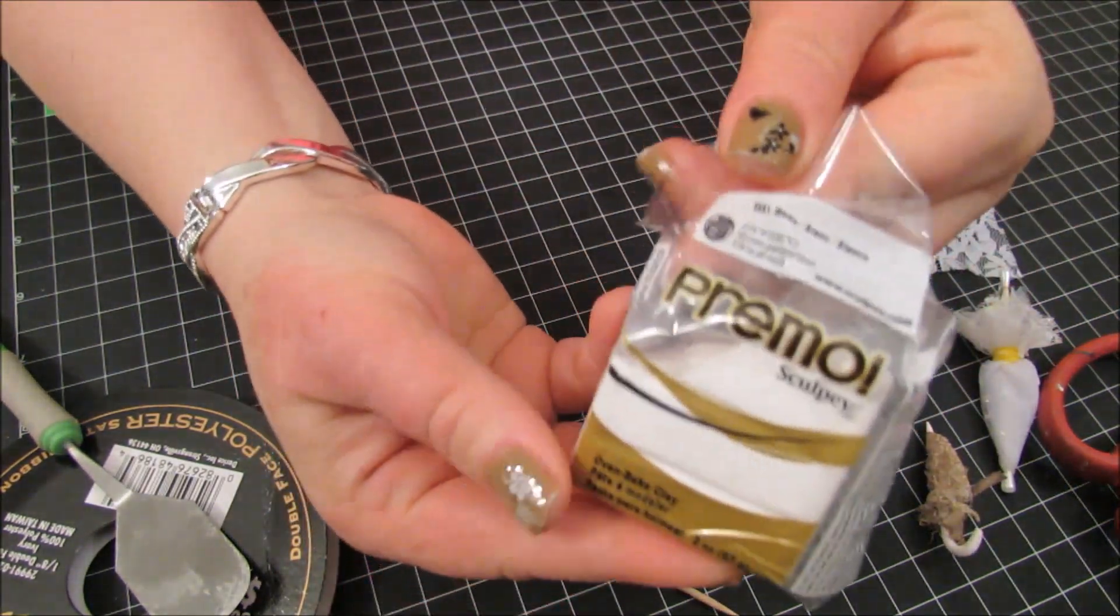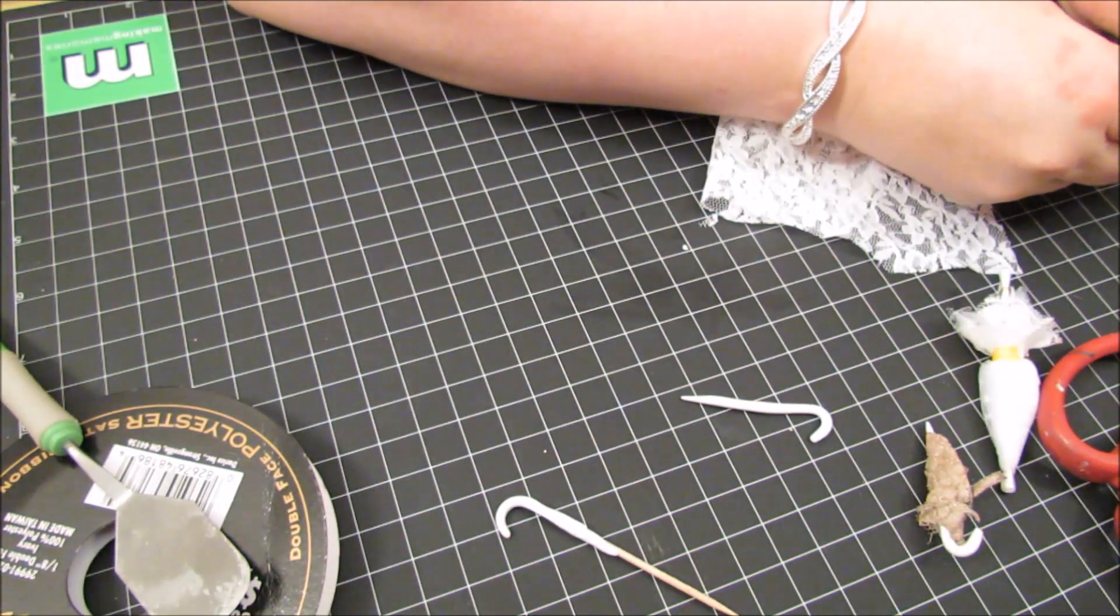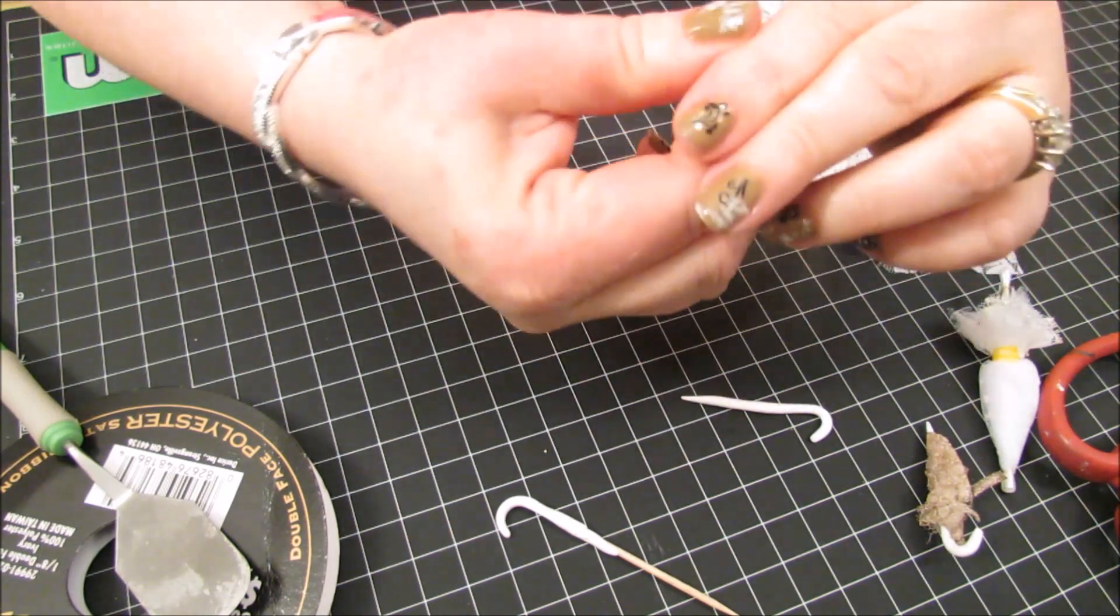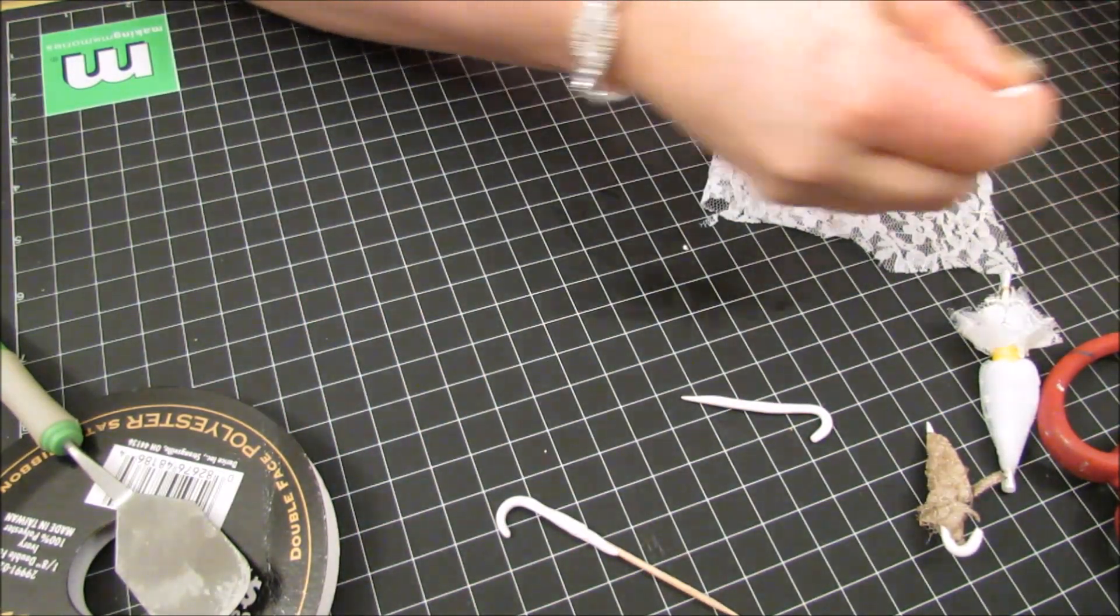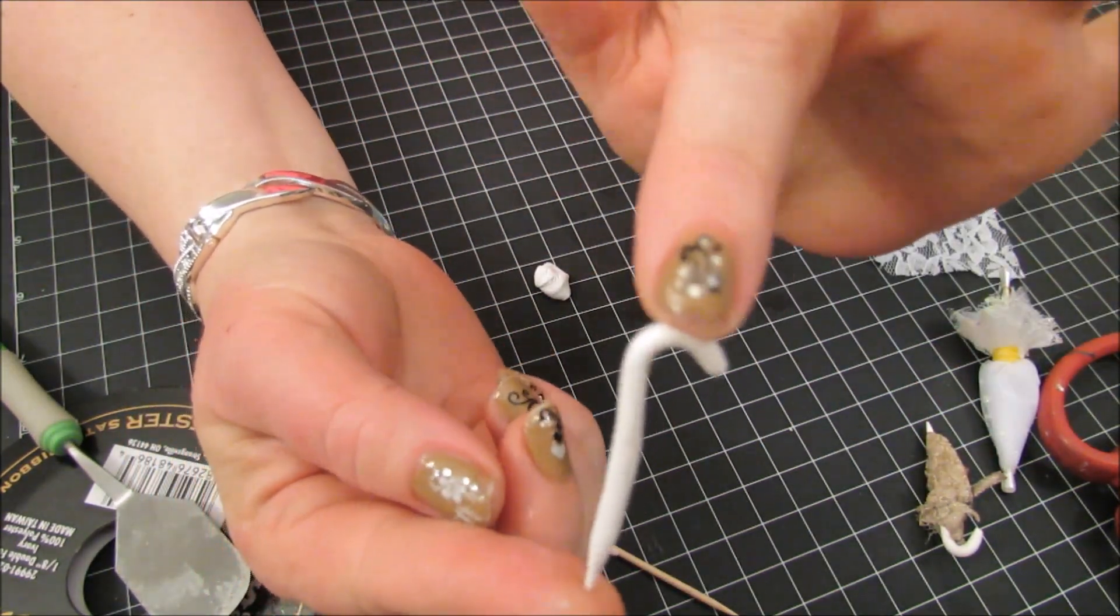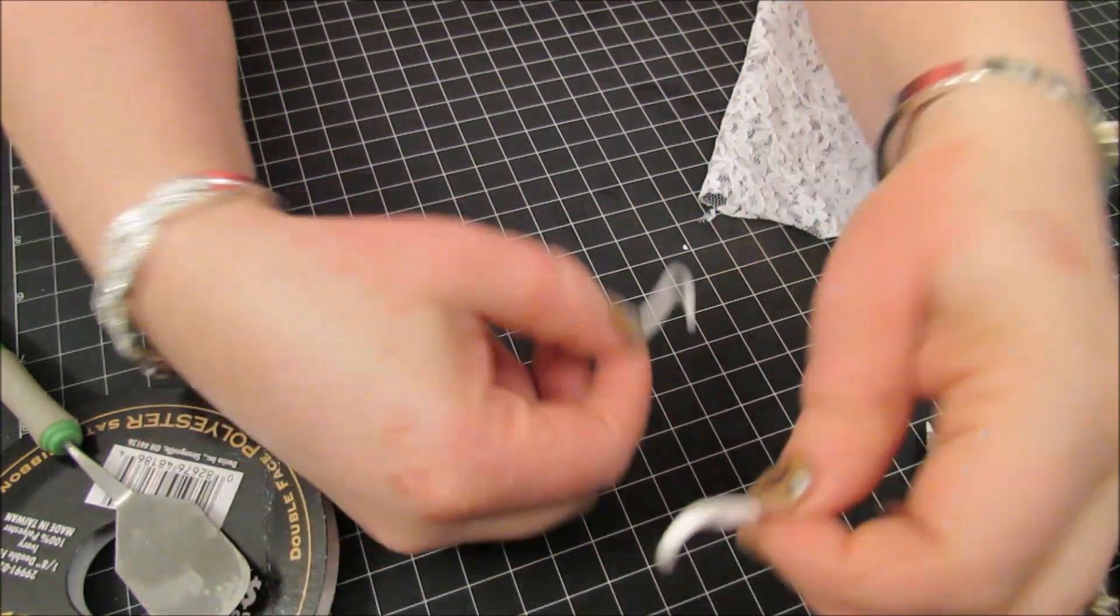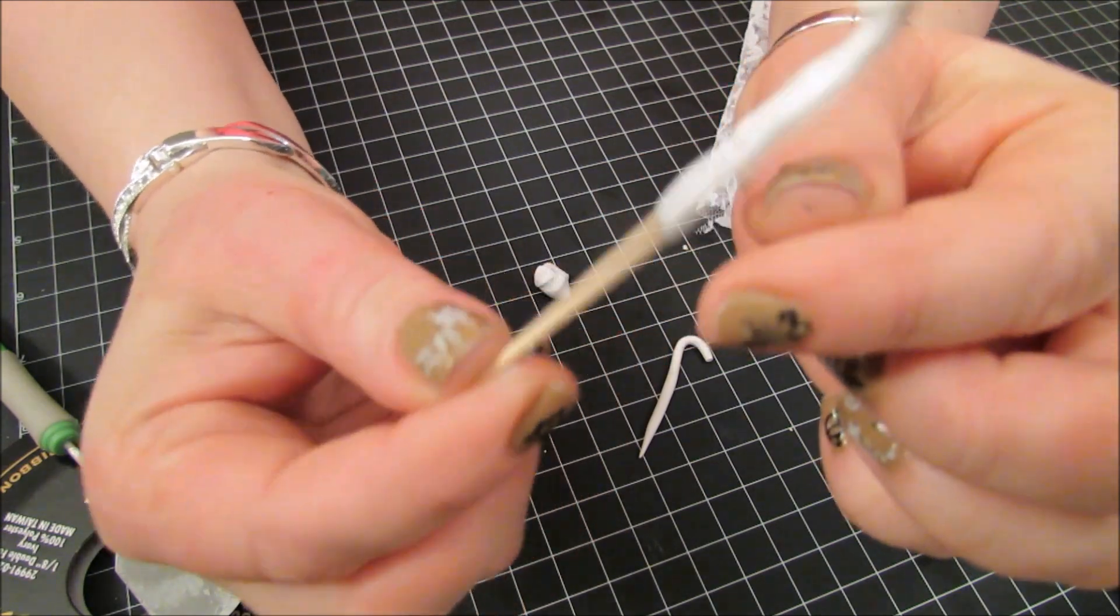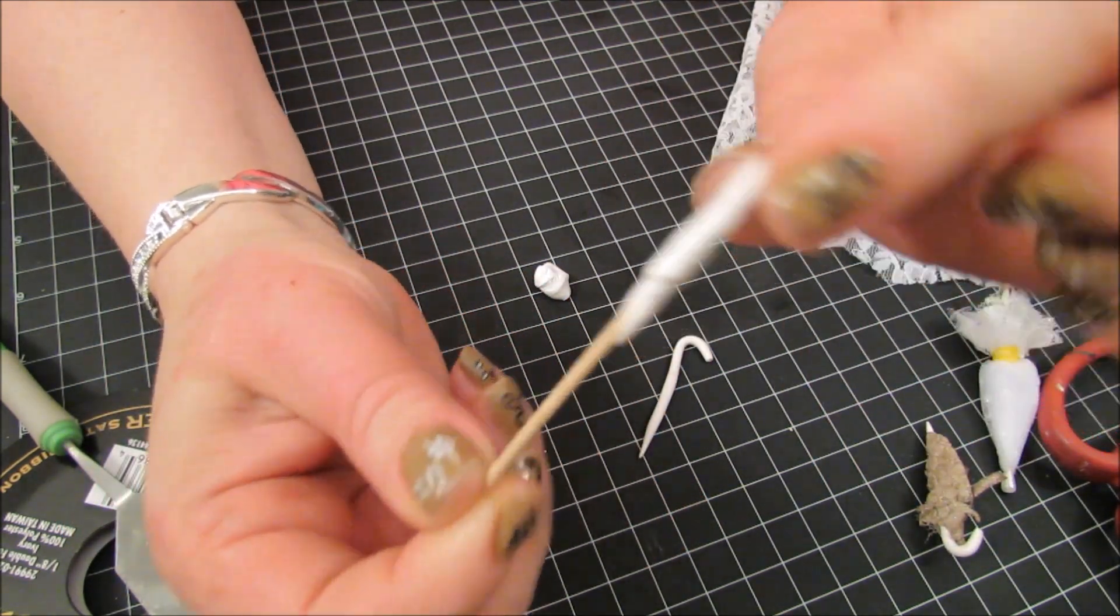And so all I did was I used some Primo Sculpey clay, you can use any type of clay you want that's oven baked. I took a little piece and I just worked it until it was soft. And then I rolled it into a little tube. I've already baked this piece. I tried two different ways. I made a handle and I just put the clay on the toothpick and baked it. This one's going to be a bigger one. So it's already hard.